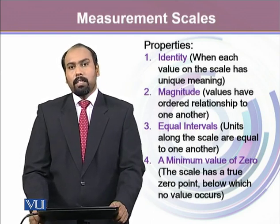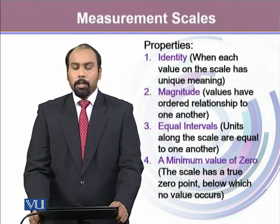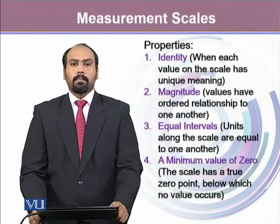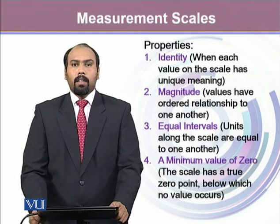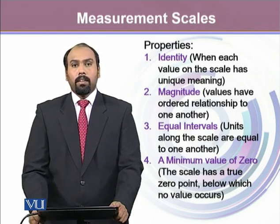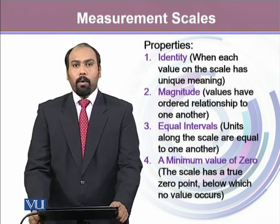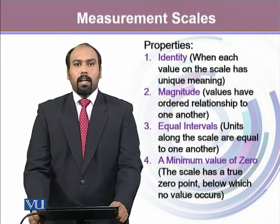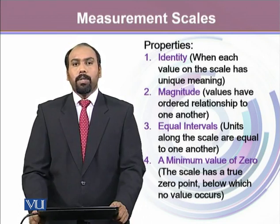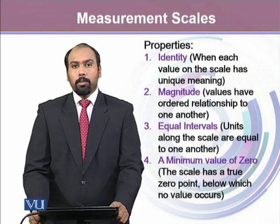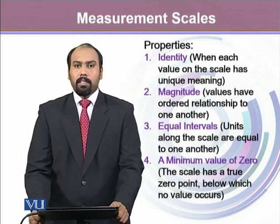Then there is equal interval — that units along the scale are equal to one another. For example, if we move from 2 to 4 and then from 4 to 6, there are two intervals. The first interval from 2 to 4 is 2 units, and the other interval from 4 to 6 is again 2 units. This interval should be the same when we talk about equal intervals.